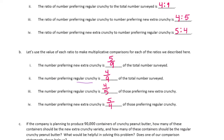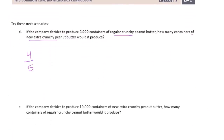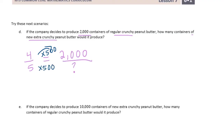Regular crunchy to extra crunchy is four to five. We want the equivalent with 2,000 regular crunchy on top. How do we get from four to 2,000? Four times 500 equals 2,000, so we multiply the denominator by 500 as well: 5 times 500 is 2,500. The company would produce 2,500 extra crunchy containers.